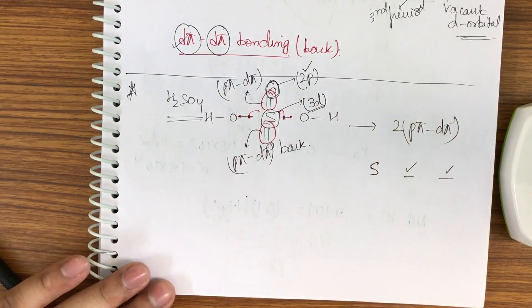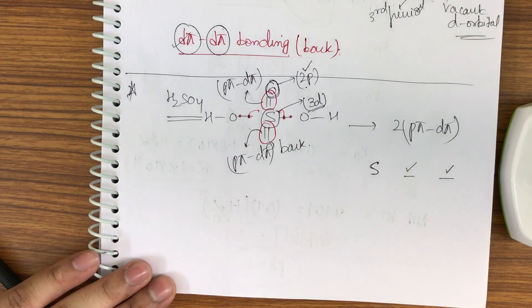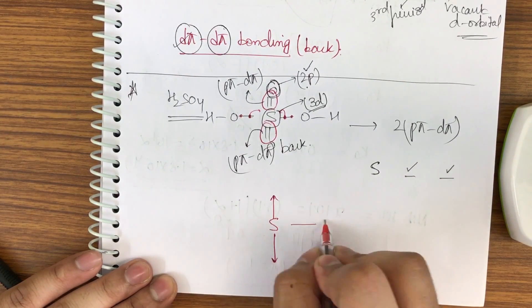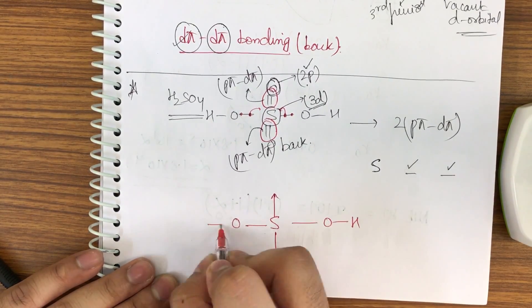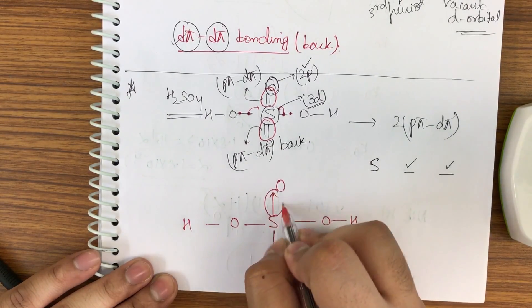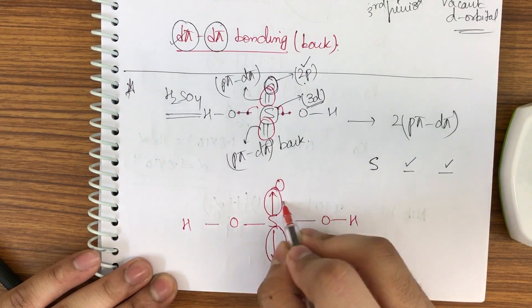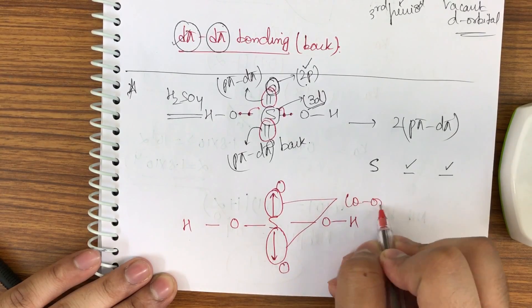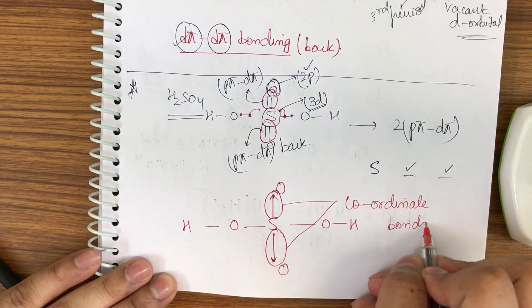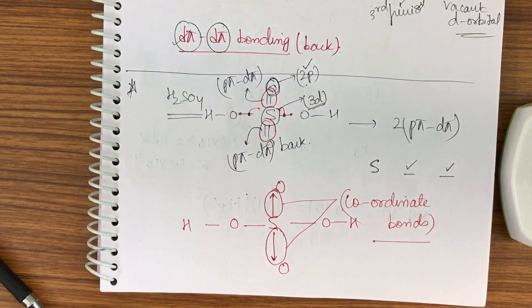Now whatever extra pi bonds that we are getting, they can be replaced by a sigma bond like this. So now these extra sigma bonds that have been replaced are known as the coordinate bonds. It is very simple.